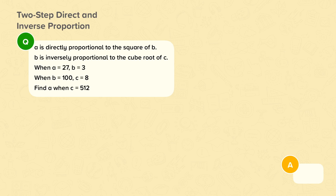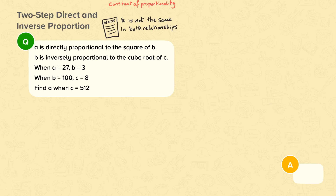One thing to note before we start is that the constant of proportionality, which we will call K, is not necessarily the same in both relationships. So we need to find it separately in both relationships — A and B, and B and C. The first thing we need to do is find the formula that links A and B.